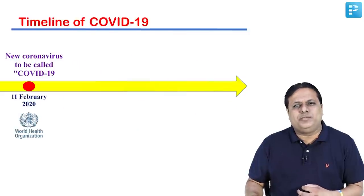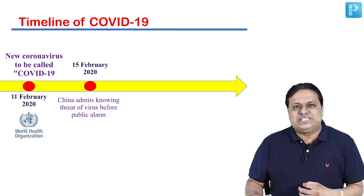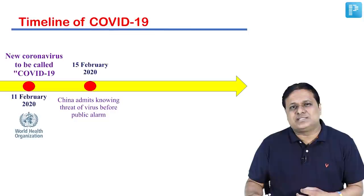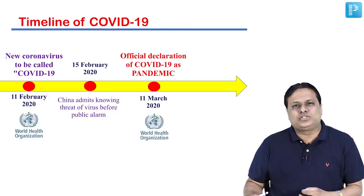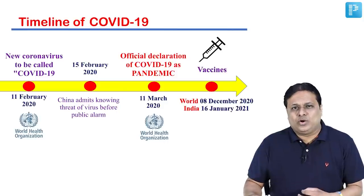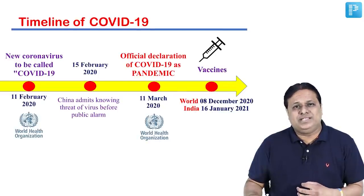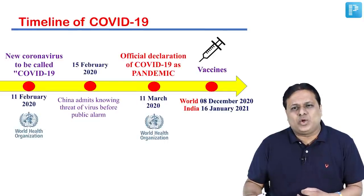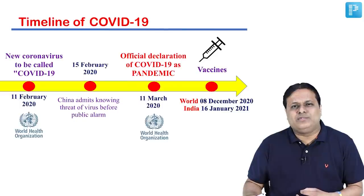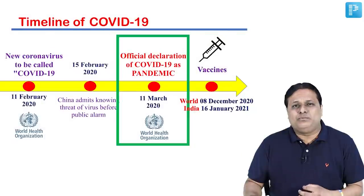The new coronavirus was labeled as COVID-19 disease on 11th February 2020 by the World Health Organization. On 15th February, China admitted they knew about the threat of this virus even before they raised the alarm. On 11th March 2020, WHO officially declared COVID-19 as a global pandemic. Take-home point: WHO declared COVID-19 as pandemic on 11th March 2020.